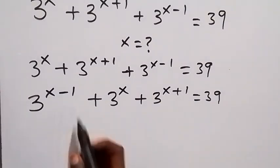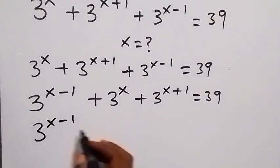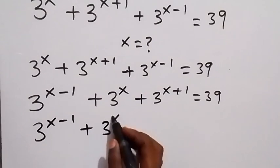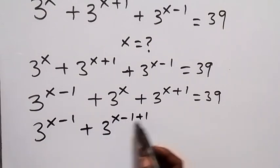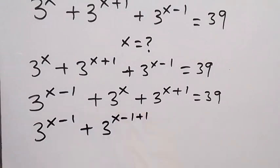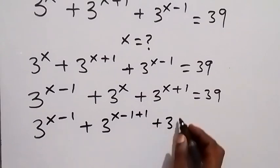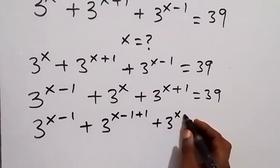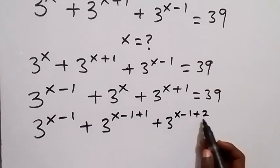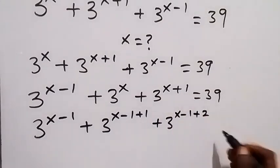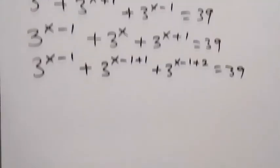So we have 3 raised to power x minus 1, then plus 3 raised to power x minus 1 plus 1 — since minus 1 plus 1 is 0, we still have 3 raised to power x. Then plus 3 raised to power x minus 1 plus 2 — since minus 1 plus 2 gives us x plus 1 — which is equal to 39.